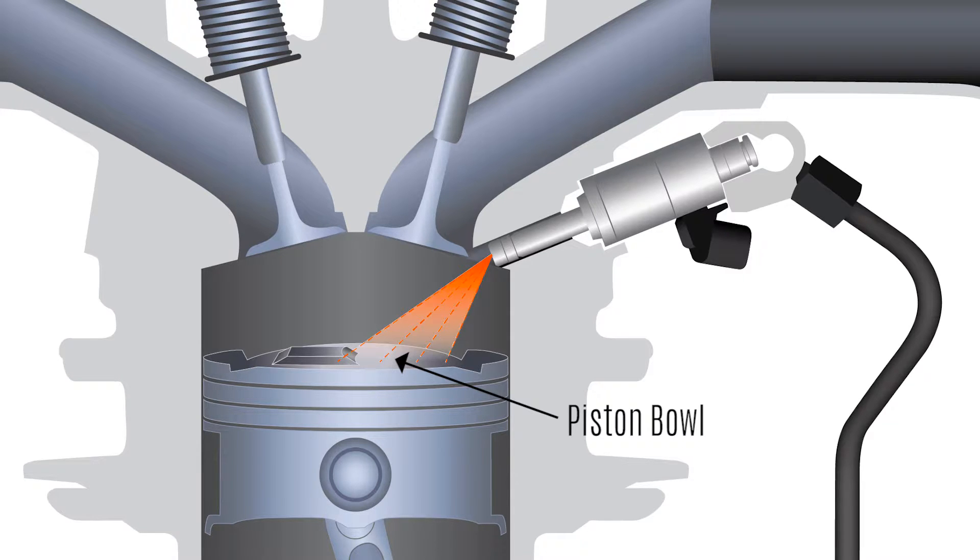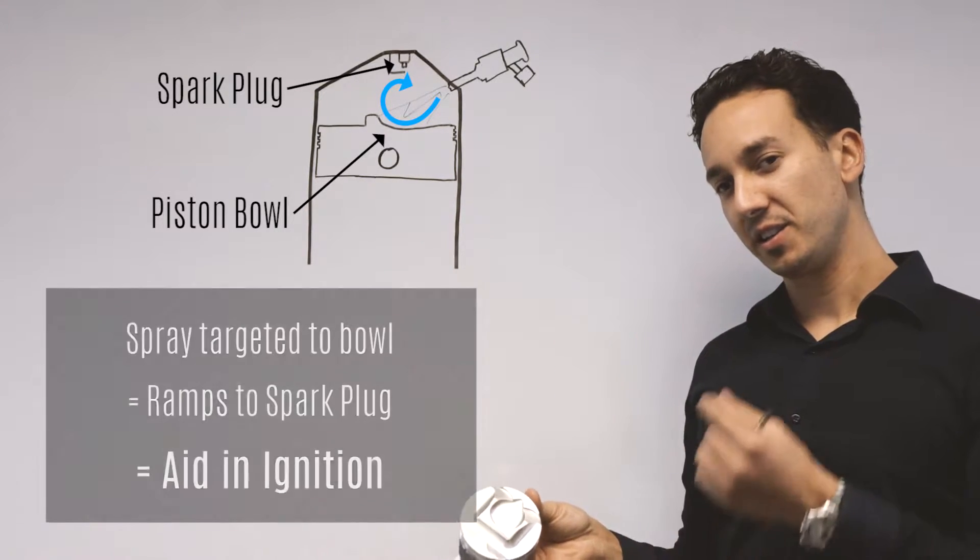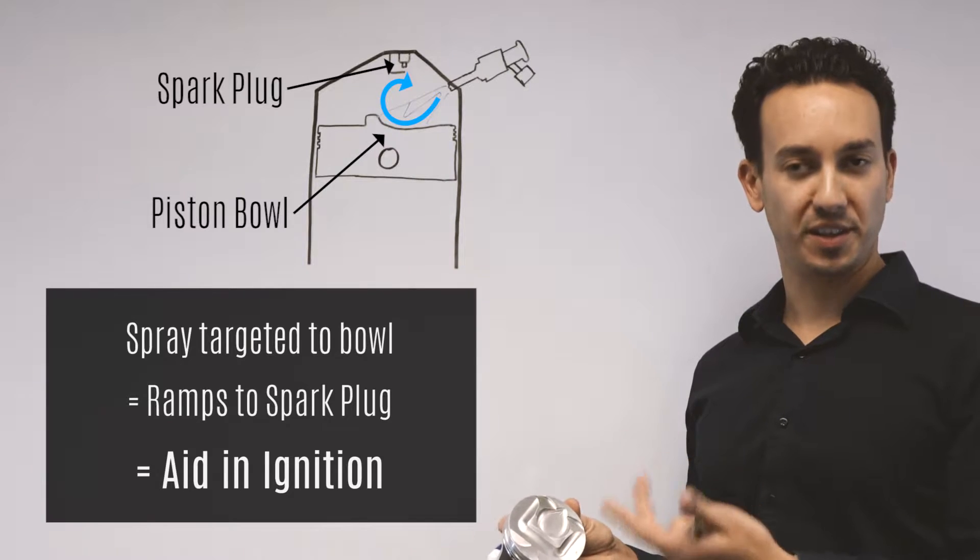That ensures that if the fuel was to impinge anywhere, it would impinge on this bowl, where it will then ramp up towards the spark plug, creating a localized rich region that will aid ignition.